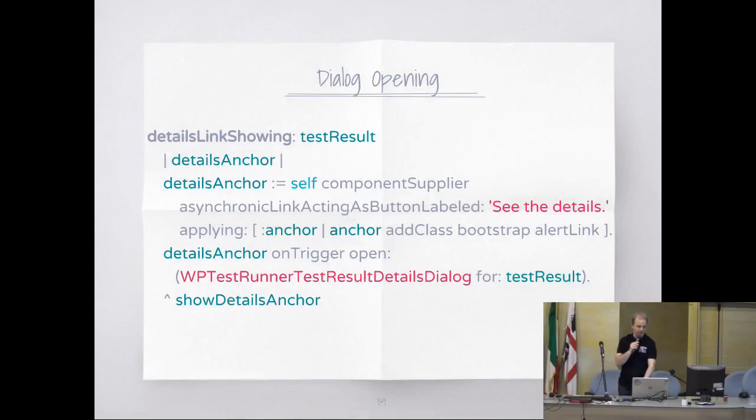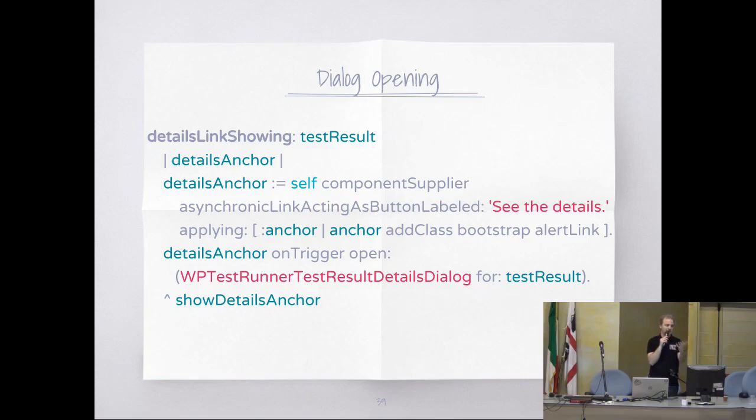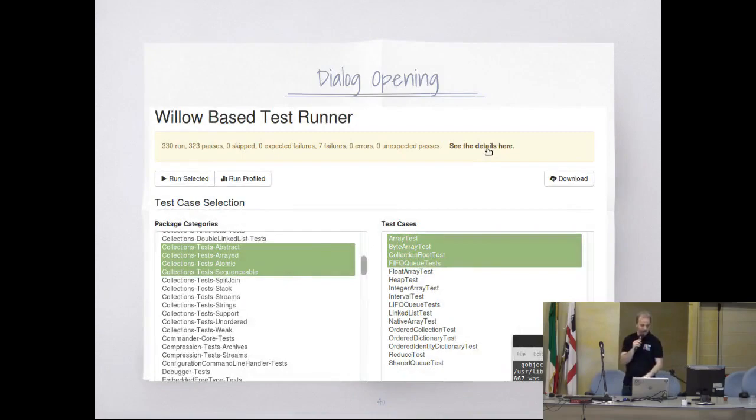This is an example of opening a dialog. We have a link. To the component supplier I say: give me a link with the label 'see the details'. And to the link I say: on trigger, open that dialog. The dialog class is just the standard system component that will render the dialog.